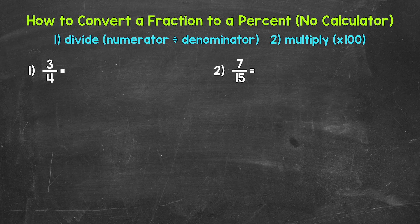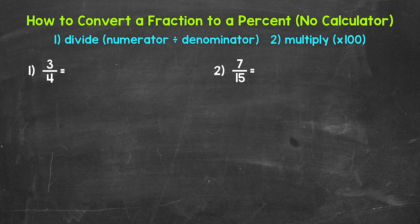When converting fractions to percents, we can do this by dividing and then multiplying. We take the fraction and divide the numerator by the denominator — the top divided by the bottom. This will give us a decimal. We then need to convert that decimal to a percent by multiplying it by 100. And remember, a quick way to multiply by 100 is to move the decimal twice to the right. So we go from a fraction to a decimal, and then that decimal to a percent.